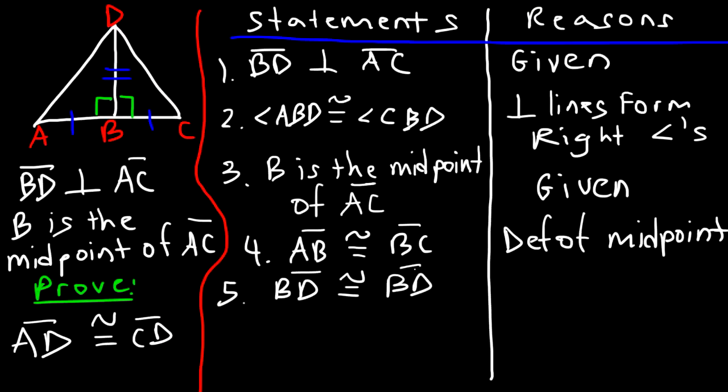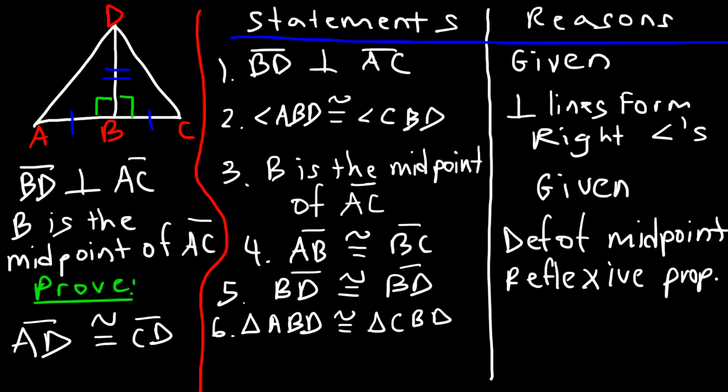So we can say that triangle ABD is congruent to triangle CBD. The reason for that: we have a side, an angle, and a side. So it's the Side-Angle-Side postulate. To prove it, we've used statements 2, 4, and 5.